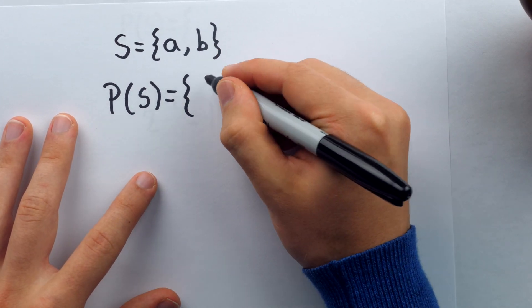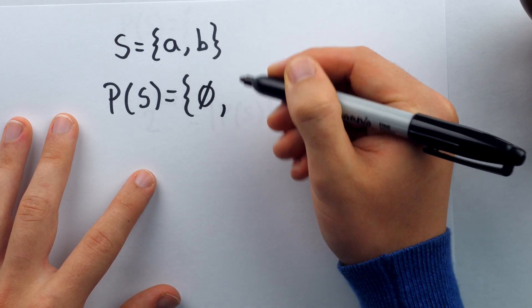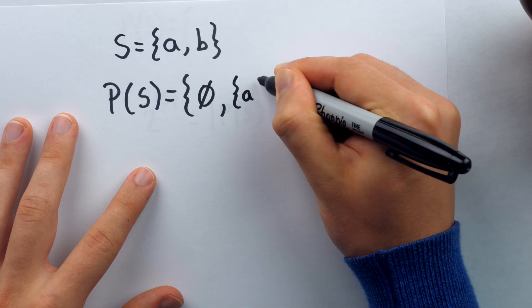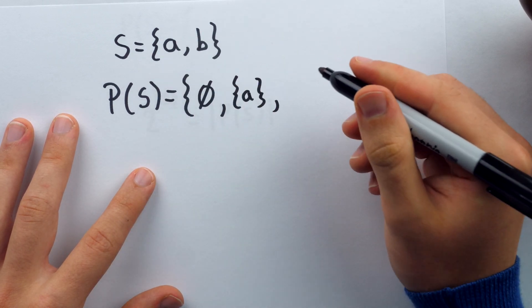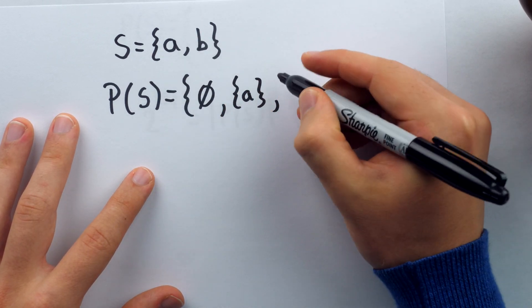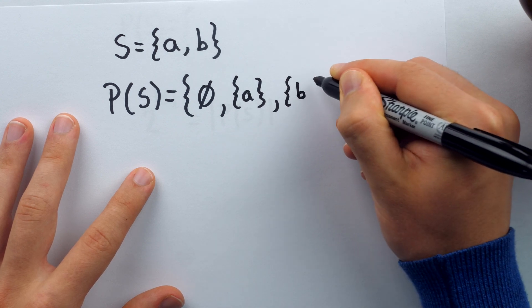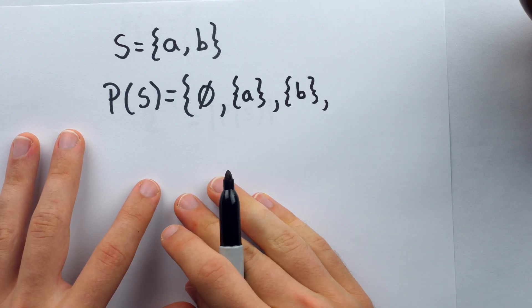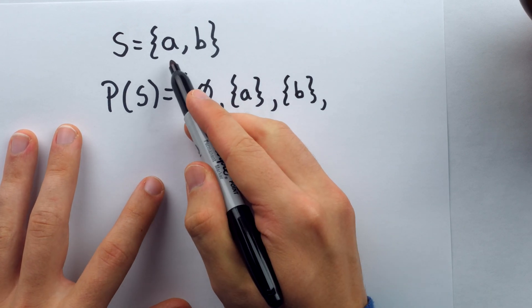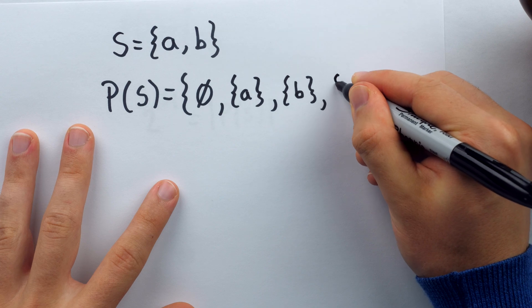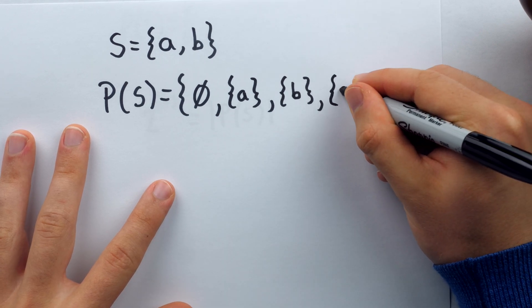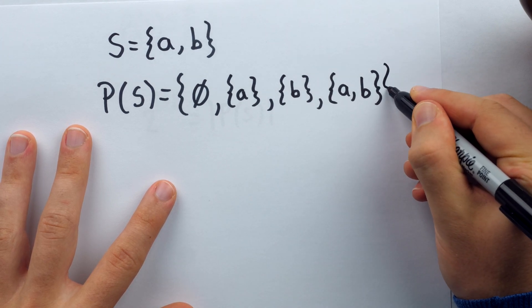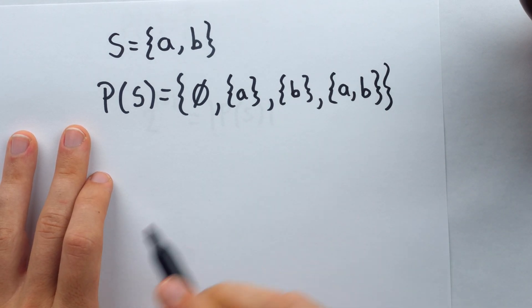Well, there's the empty set. You want to make sure you don't forget that. There is the set containing the element A, that's an element of the power set because it's a subset of S. And there's the set containing the other element B, that is also a subset of S. And then finally, there's the set containing both A and B, which happens to be the whole set S itself. That is the power set of S.